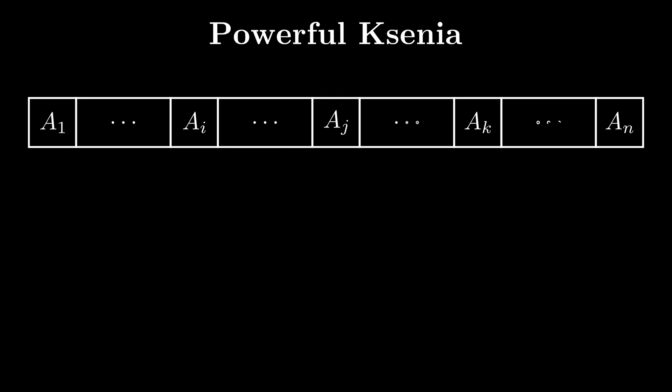In this problem, we're given an array a of n positive integers. In one operation, we can choose three distinct integers i, j, and k, and replace a[i], a[j], and a[k] with the XOR of a[i], a[j], and a[k]. We're meant to make all elements of the array equal in at most n operations, or determine that it's impossible.